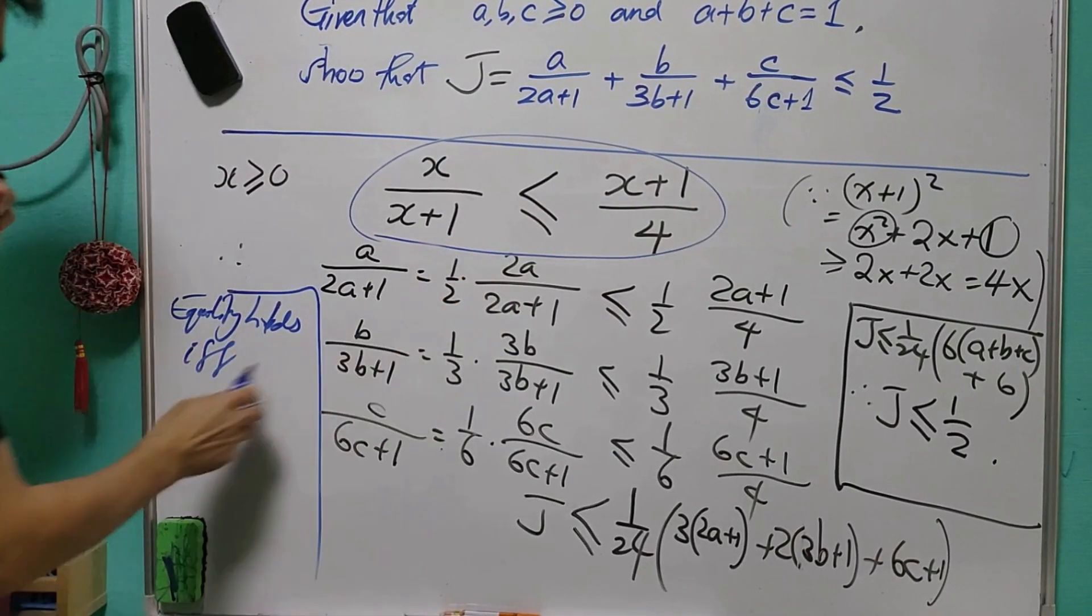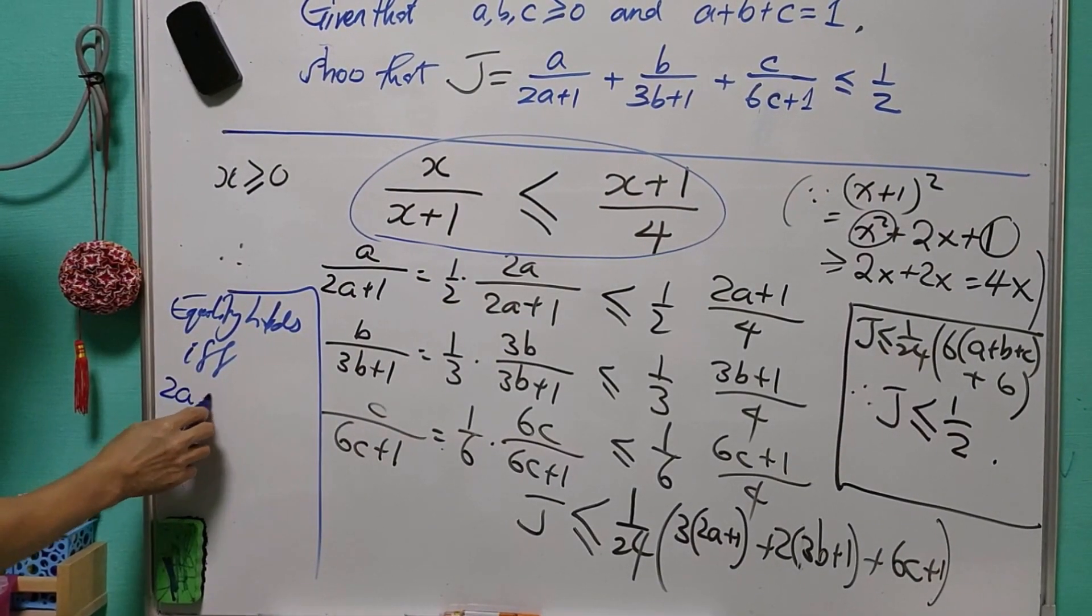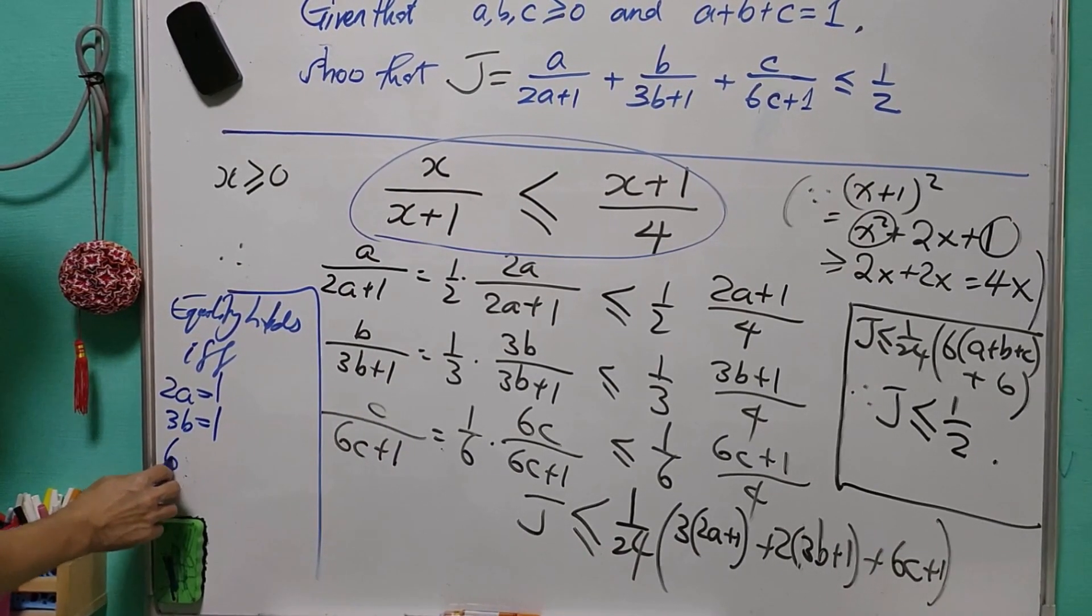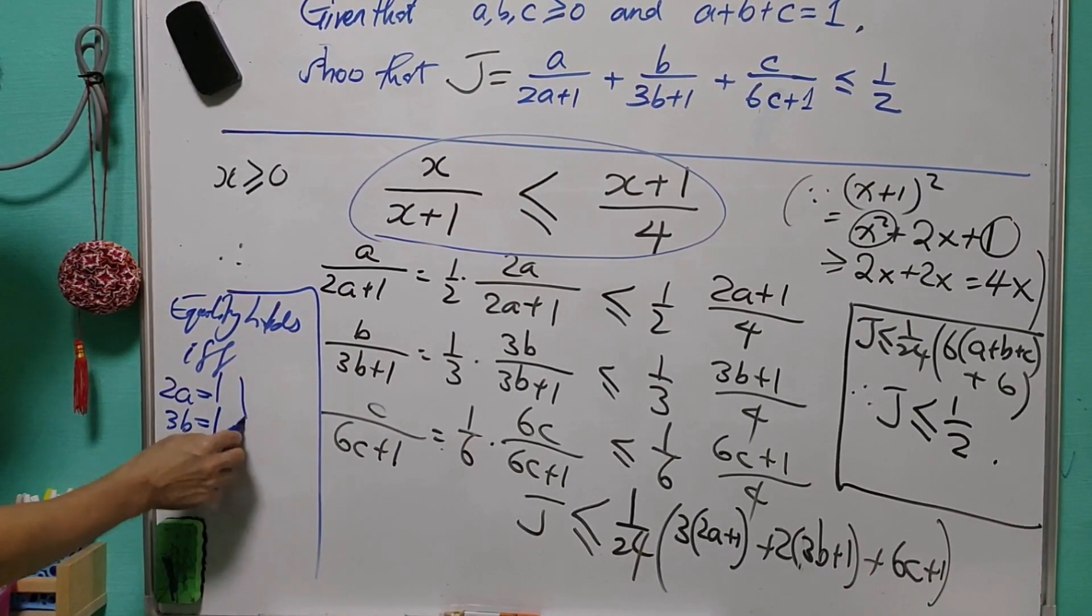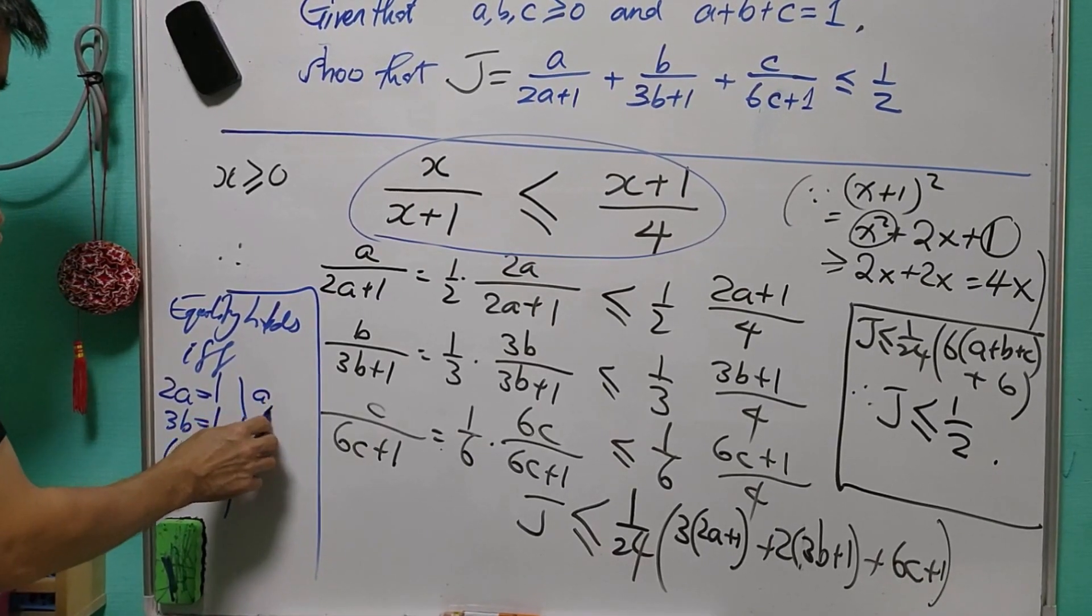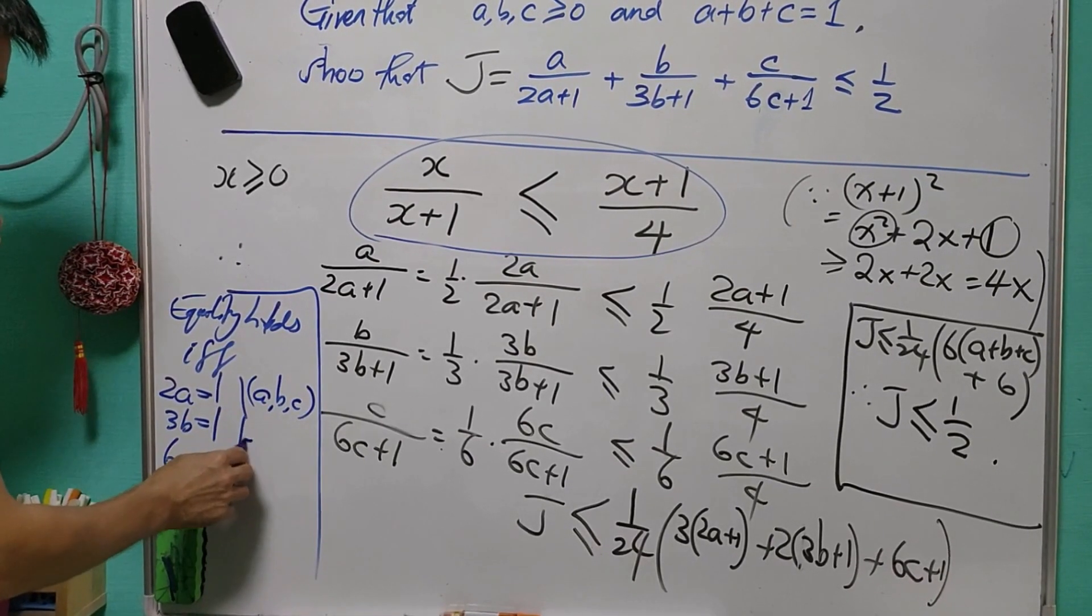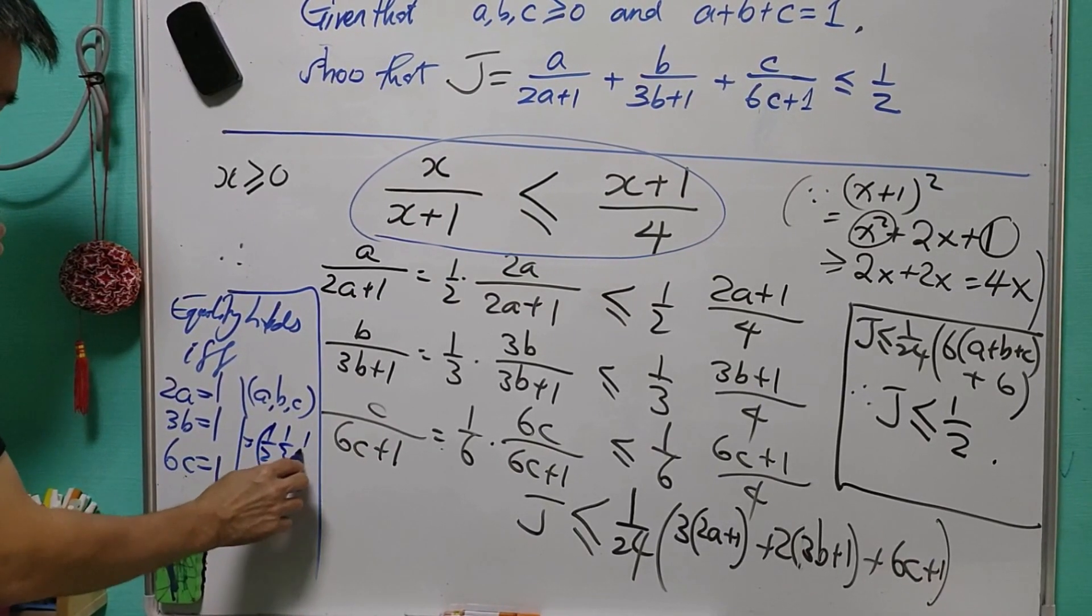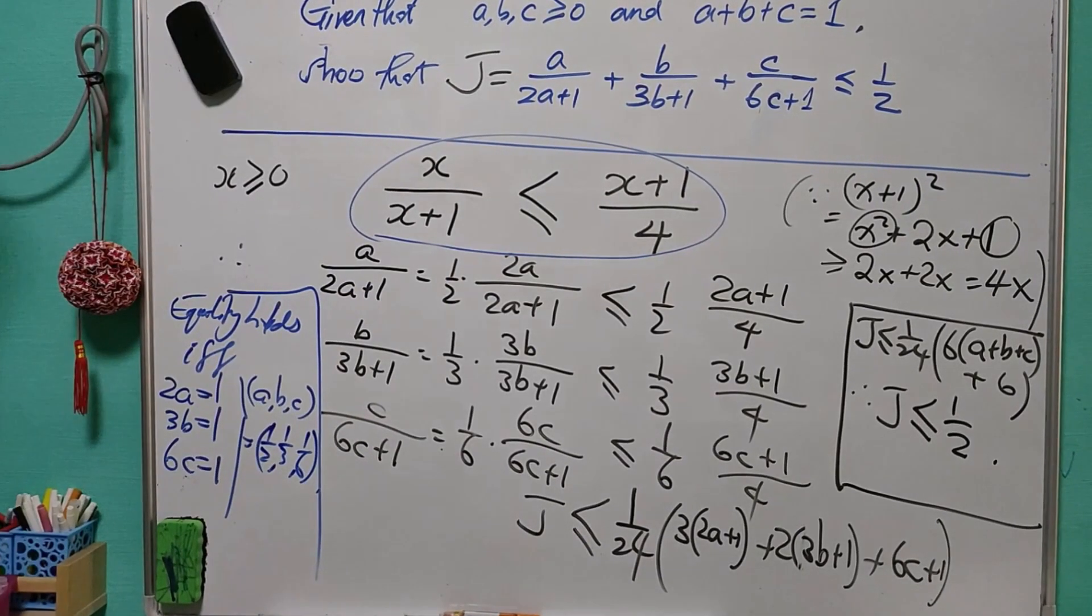And therefore, for this case, 2A has to be equal to 1, 3B has to be equal to 1, and 6C has to be equal to 1, which means that ABC has to be equal to half, 1 over 3, and 1 over 6.